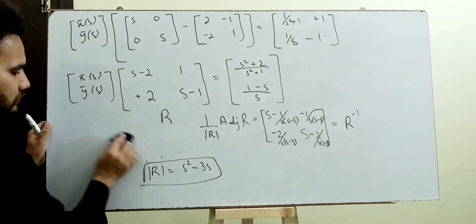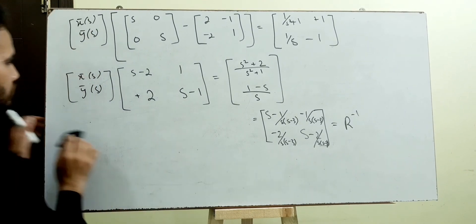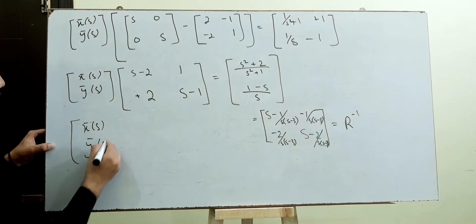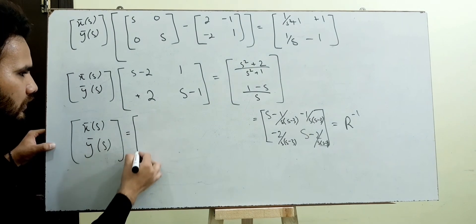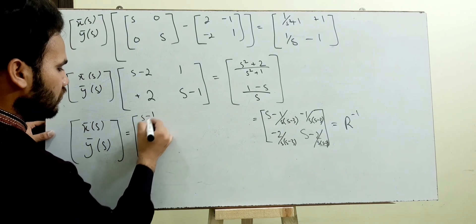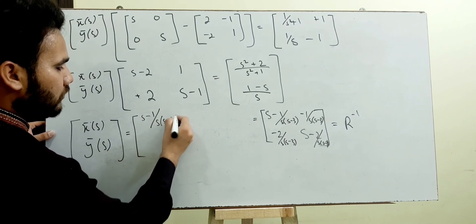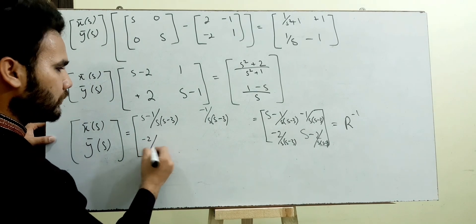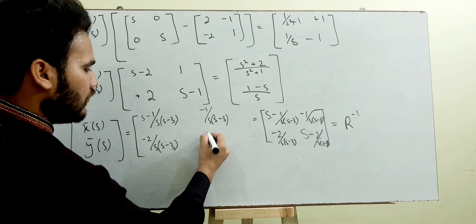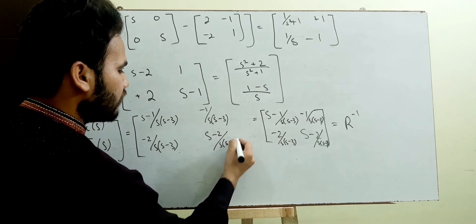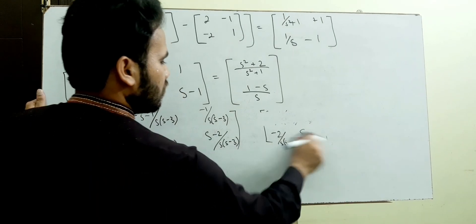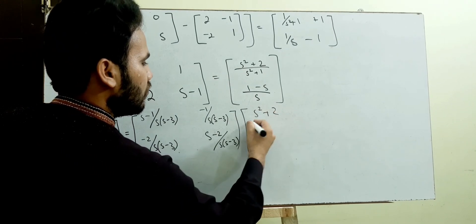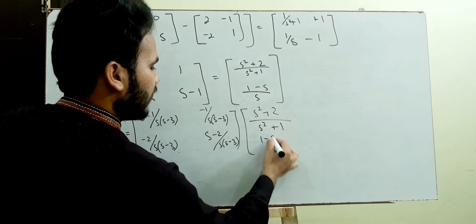Multiplying, the result will be [X̄(s); Ȳ(s)] equals R inverse times the right-hand side vector. This gives us expressions with entries such as (s-1)/(s(s-3)), -1/(s(s-3)), (s-2)/(s(s-3)), and so on, multiplied by [(s²+2)/(s²+1); (1-s)/s].